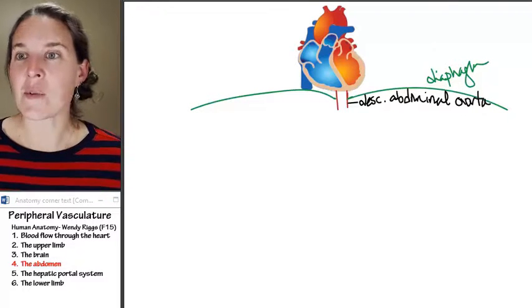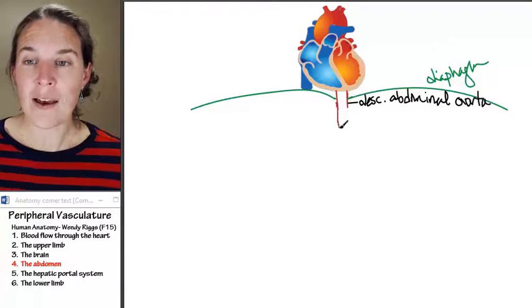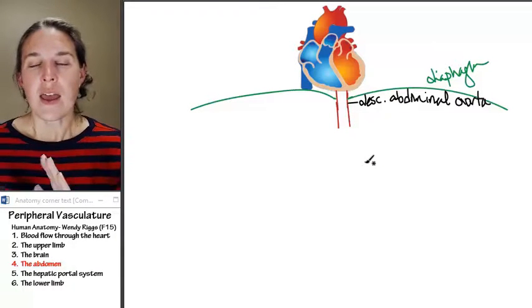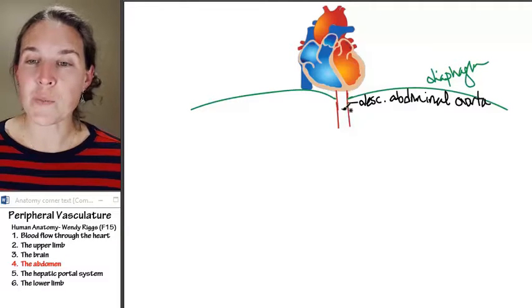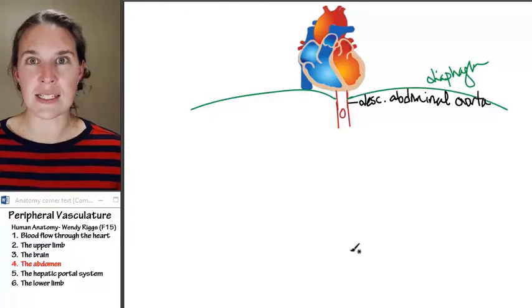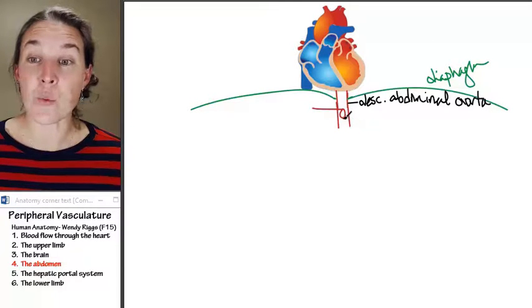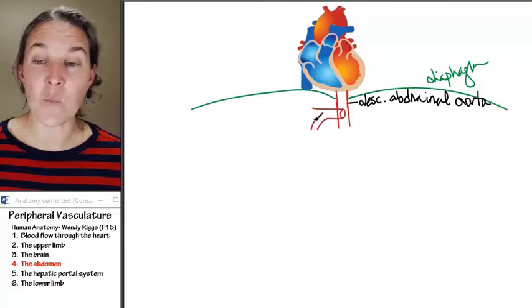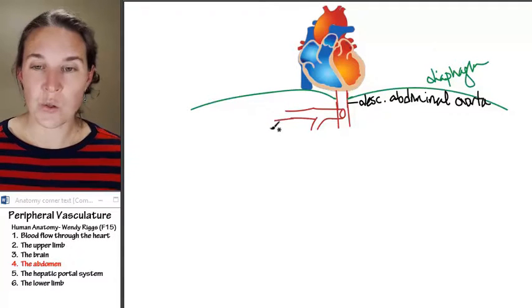The descending abdominal aorta, as soon as it enters into the abdominal cavity, has multiple branches that come branching right off. I am simplifying because you're glad that I'm simplifying. The first branch is a single vessel, and it actually has three big branches, but for our purposes, we're only going to name one of the branches, and we're going to send that branch to the liver.